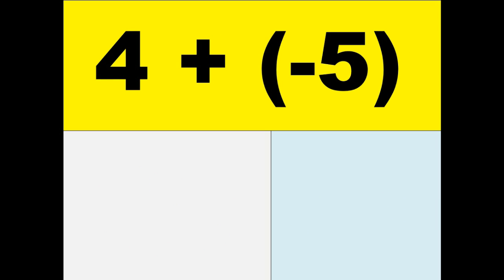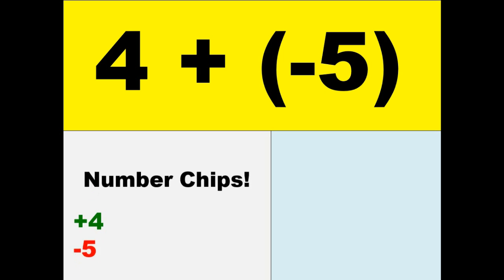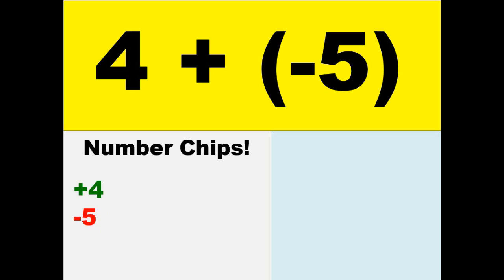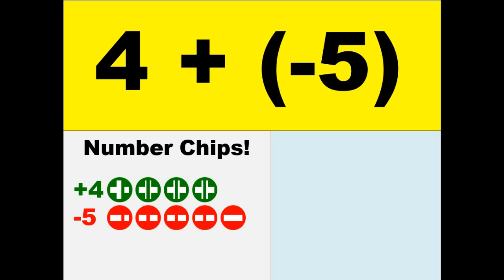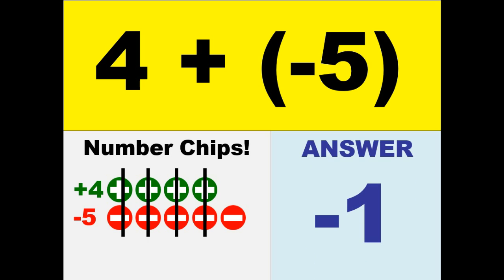We have 4 plus negative 5. That means 4 positive chips and 5 negative chips. Since these are opposite chips, they will be cancelled out and there will be 1 chip remaining in the negative, giving us a final answer of negative 1.